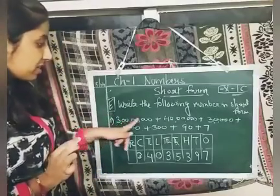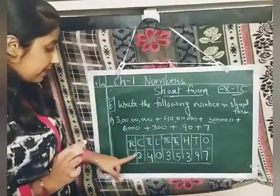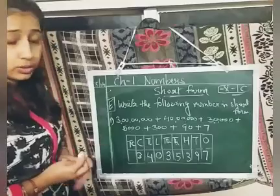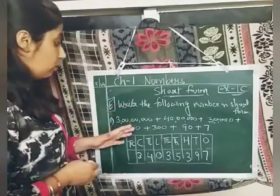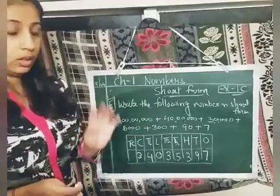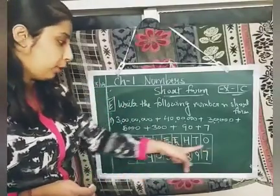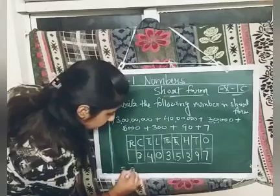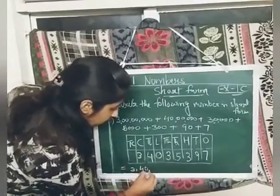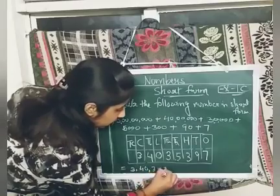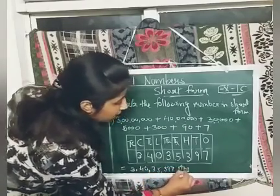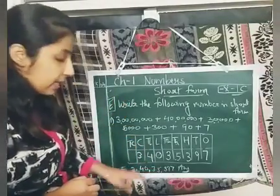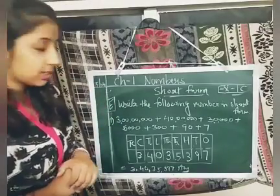Is it clear to everyone? This is 3 crore. In crore, 7 zeros are there. And for ten crore, we don't have any digit more. Is it clear, students? You will do the other parts on your own. I have done only one part; you will do the other parts with the help of the place value chart.